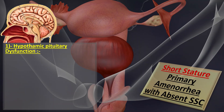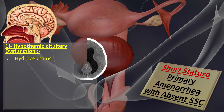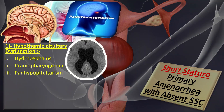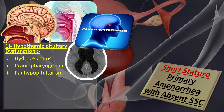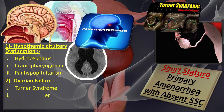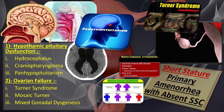In hypothalamic pituitary dysfunction, which is essentially hypogonadotrophic hypogonadism, we include conditions like hydrocephalus, craniopharyngioma, and pan-hypopituitary dysfunction. When it comes to ovarian failure, it is basically hypergonadotrophic hypogonadism, and it includes conditions like Turner syndrome, mosaic Turner, and mixed gonadal dysgenesis.